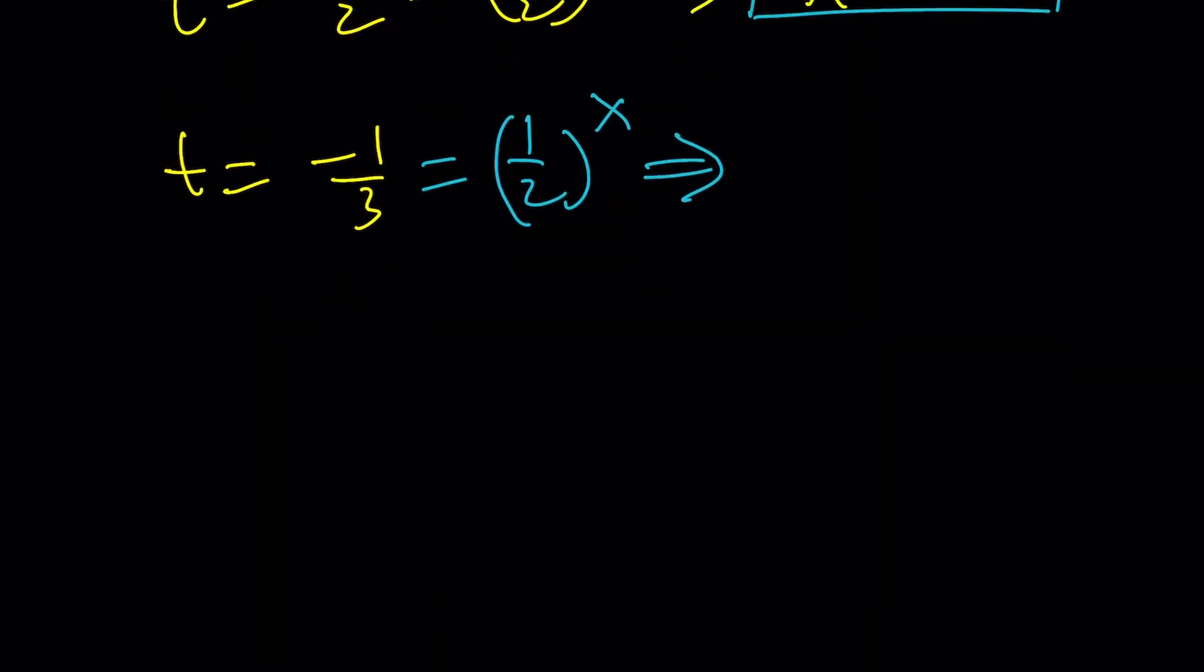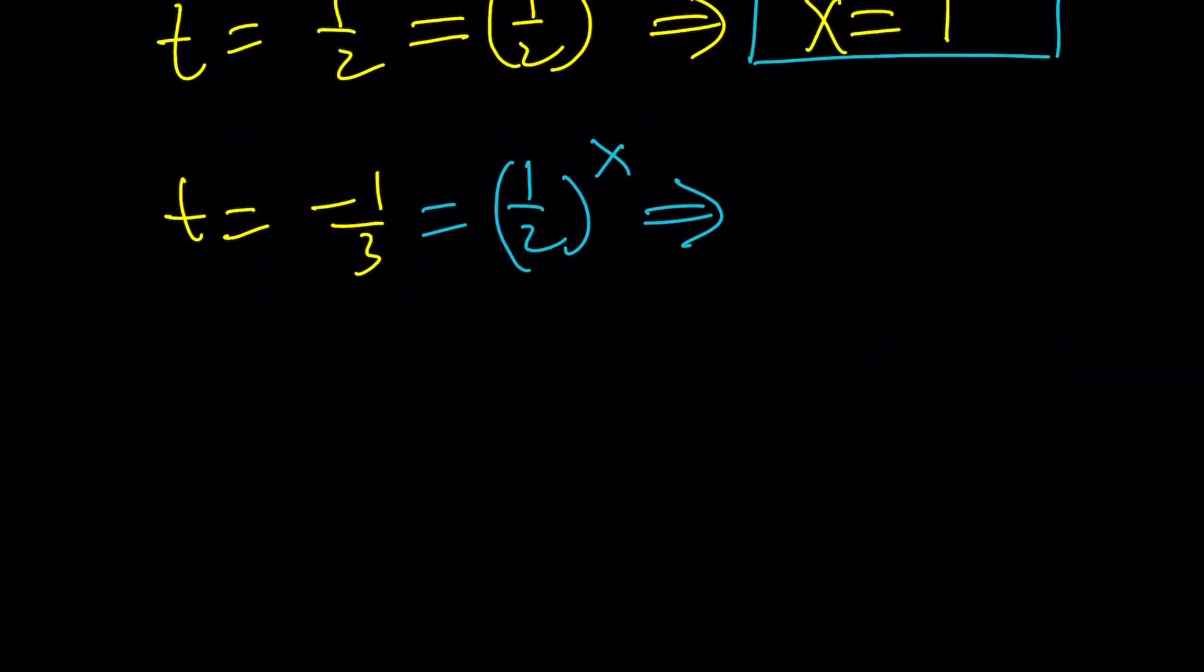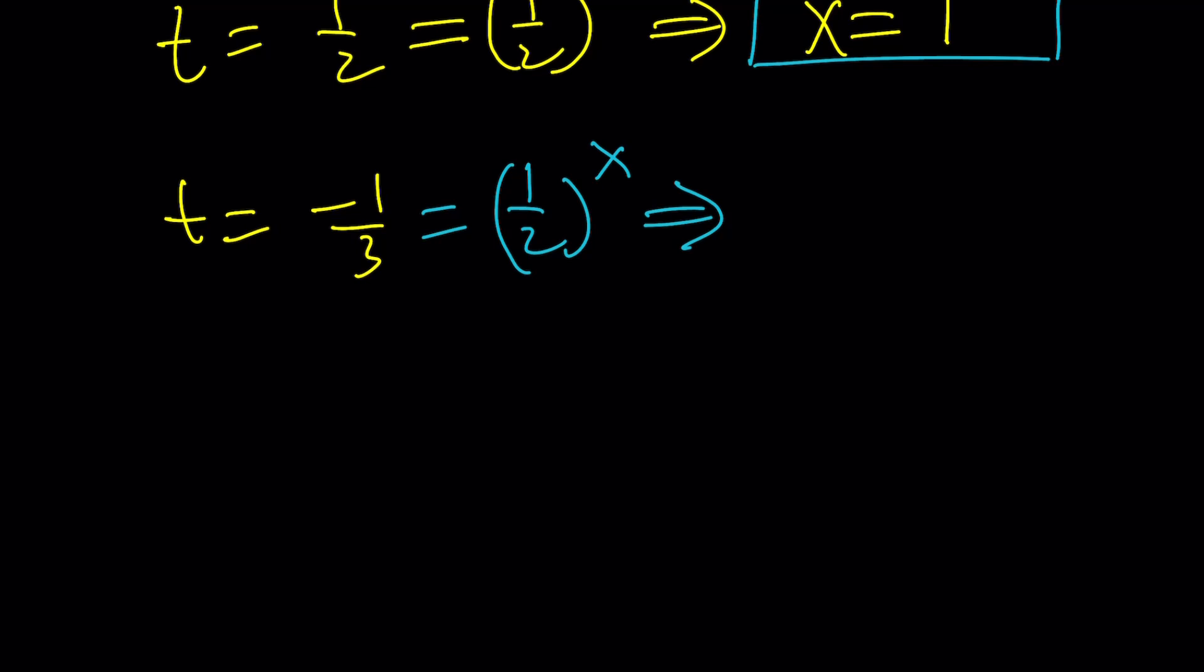We're going to complexify both sides. In other words, we're going to use an exponential. Any complex number can be written as r times e to the i theta, where r is the modulus and theta is the argument. In most cases we use the principal argument. Let's go ahead and do this.